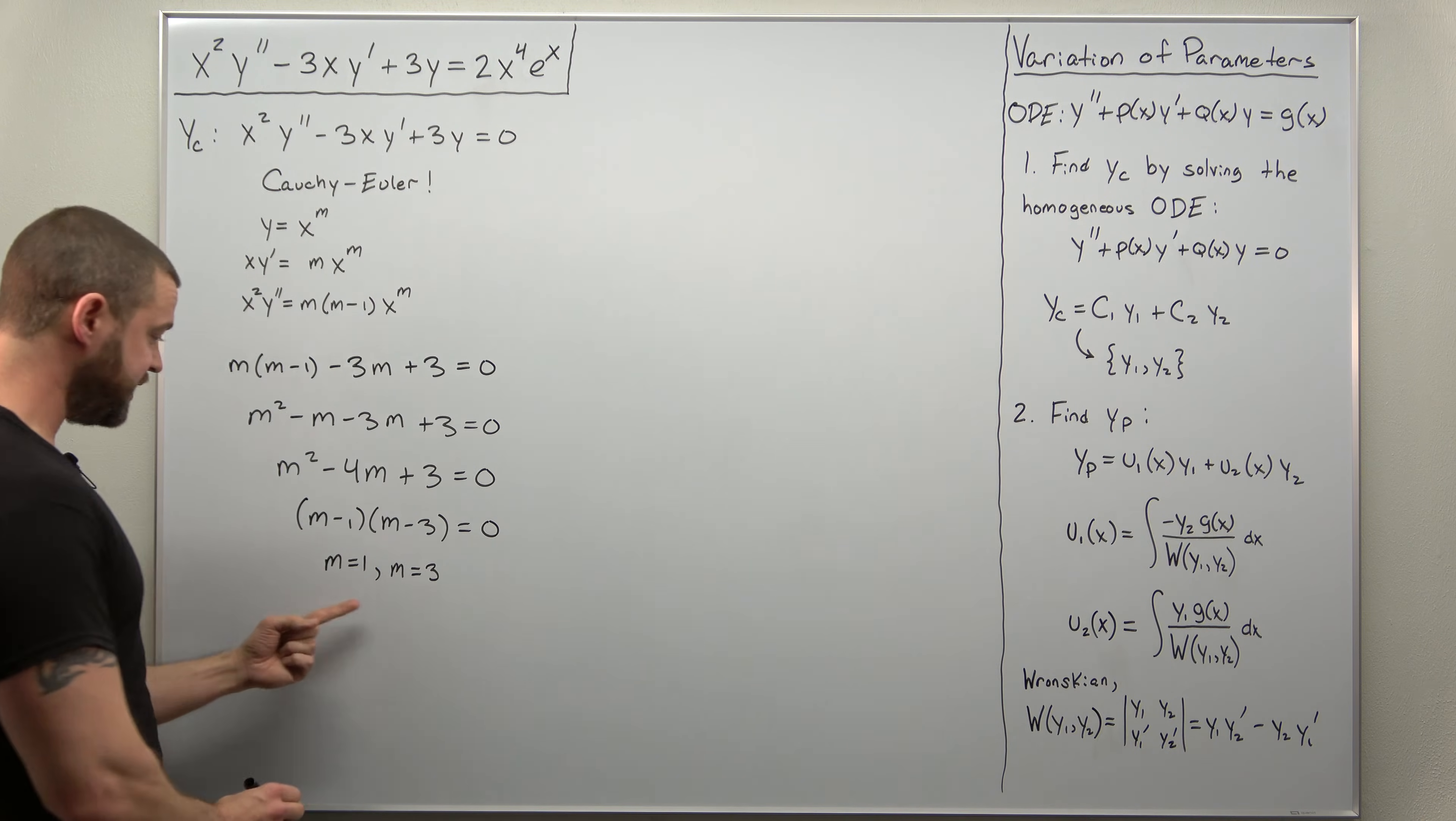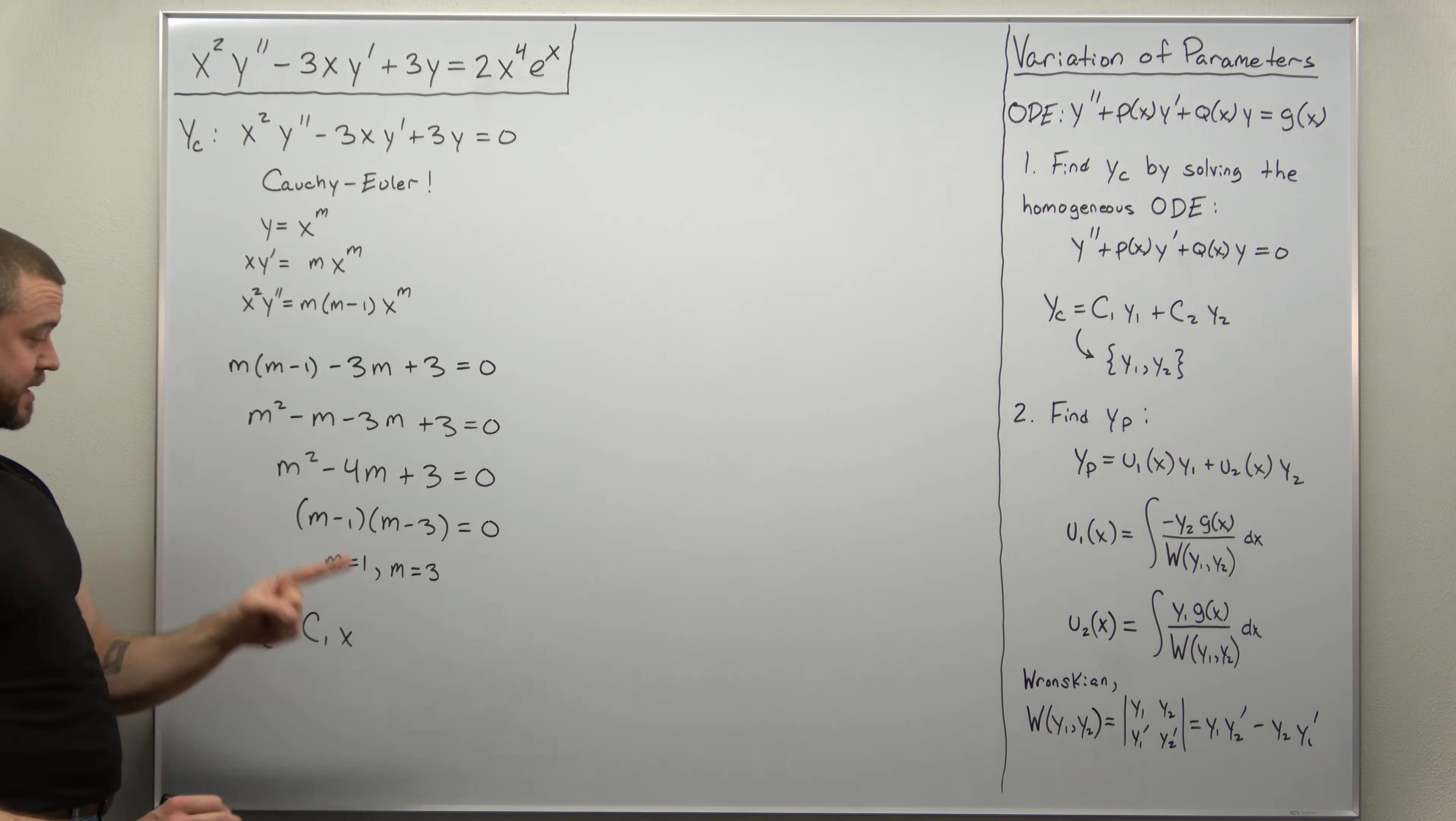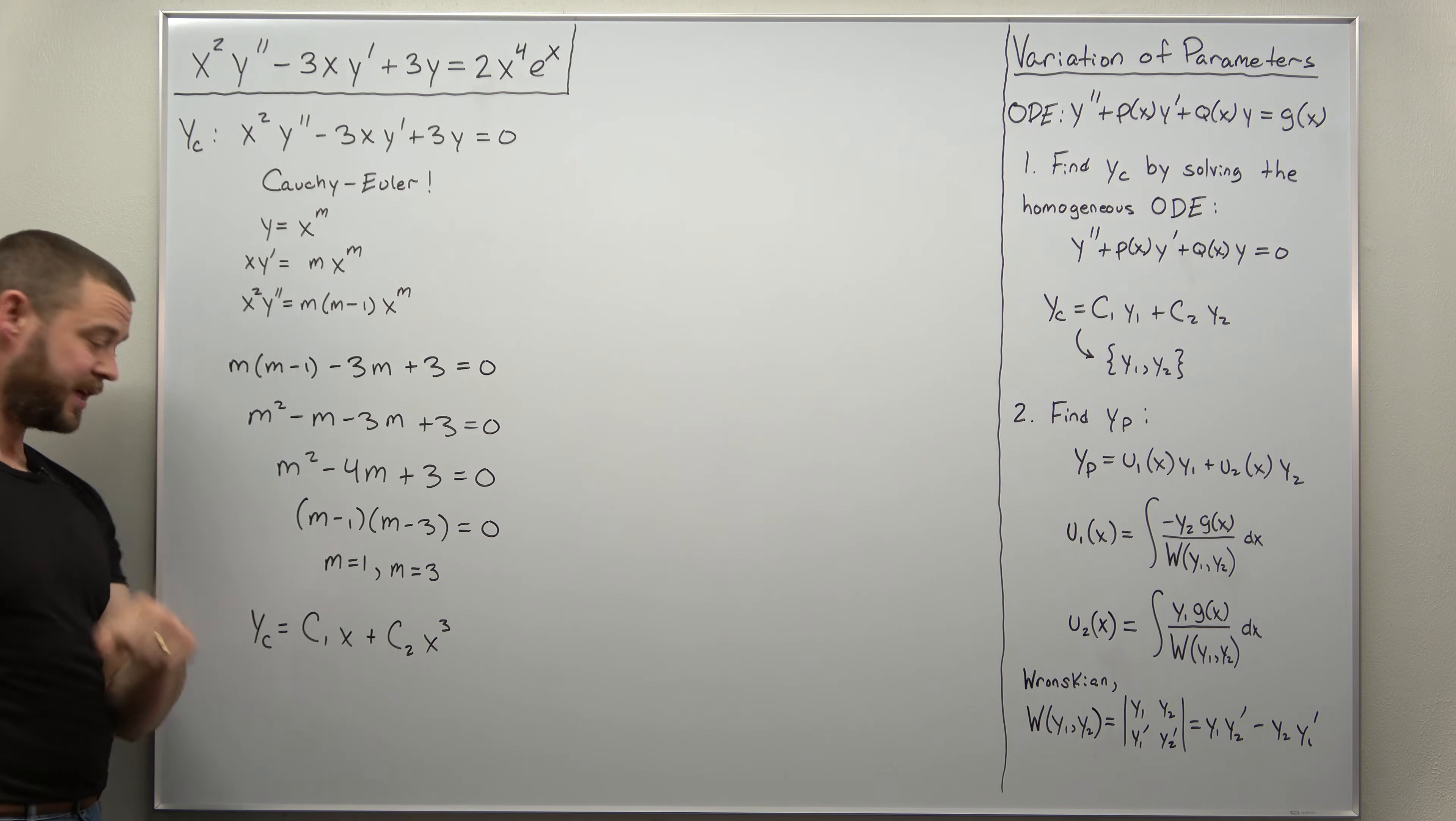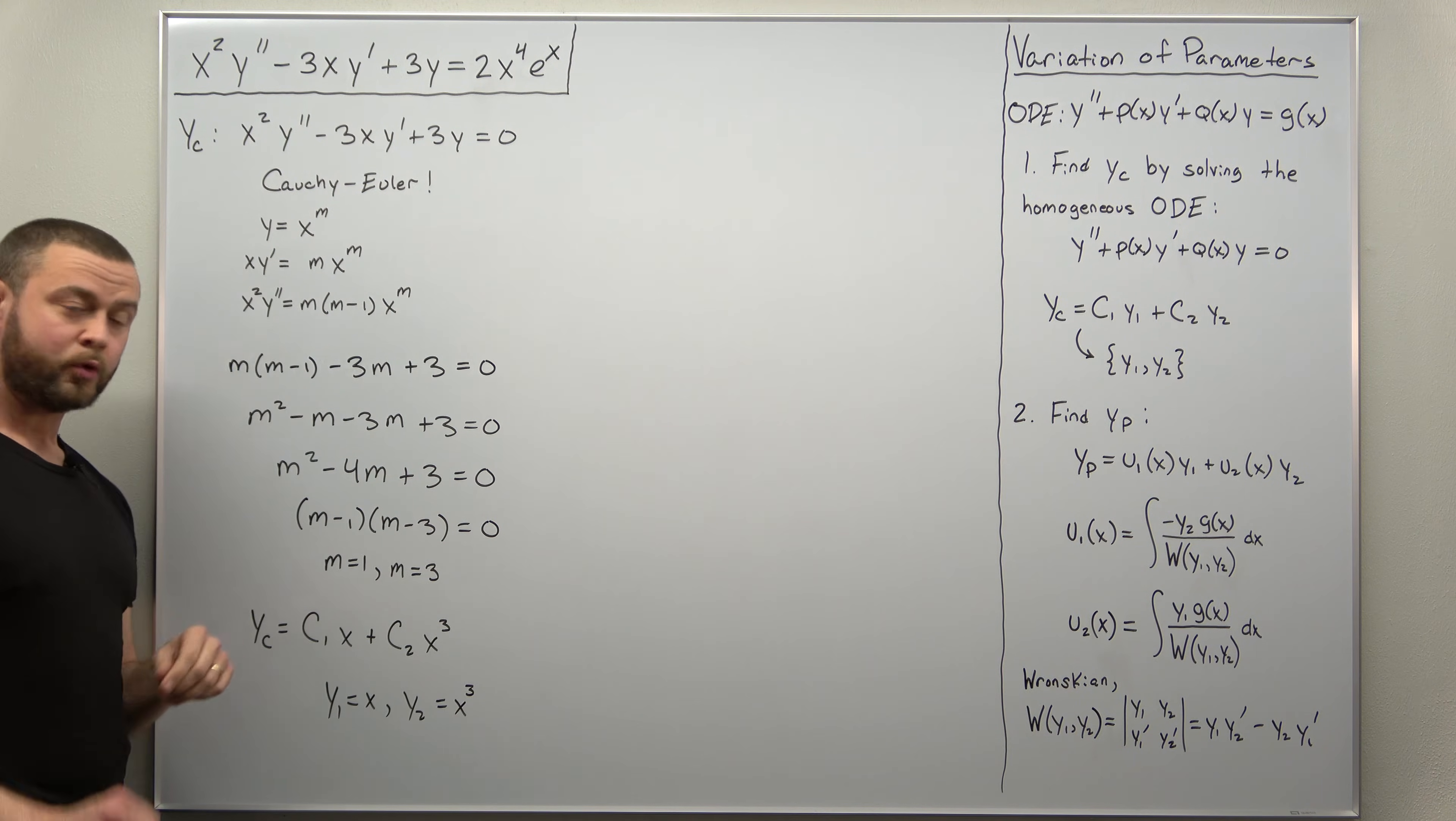All right, so we have our complementary solution. Each value of M gives you a power of X. So we get our complementary solution, a constant times X to the M. In this case, we'll go with M as 1, so X to the 1. And then plus another constant times X to the other power of 3. So we get our Y1 and Y2 as X and X cubed.